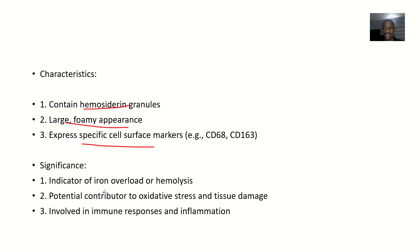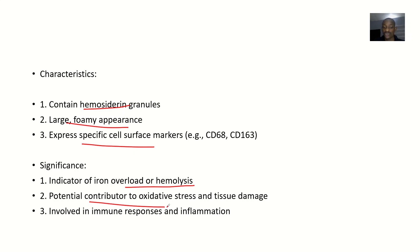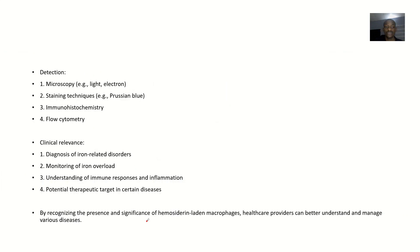In terms of significance, if you find them in a pathological slide, they indicate that there is iron overload or breakdown of red blood cells. They are a potential contributor to oxidative stress and tissue damage, and they are involved in immune responses and inflammation — once you see them in a pathological slide.